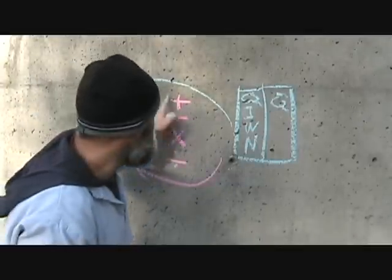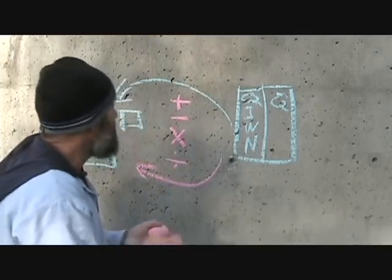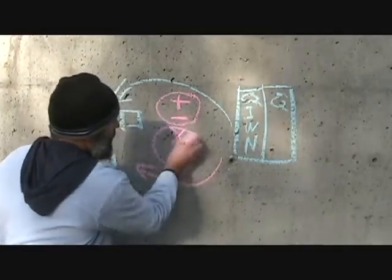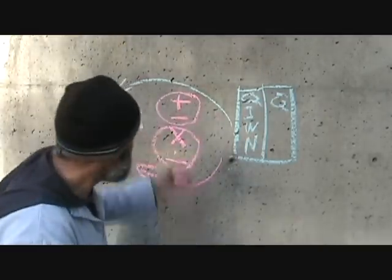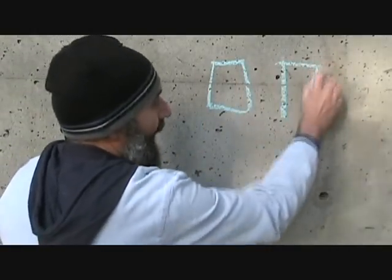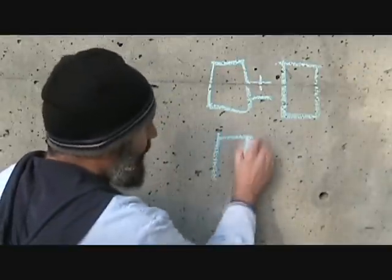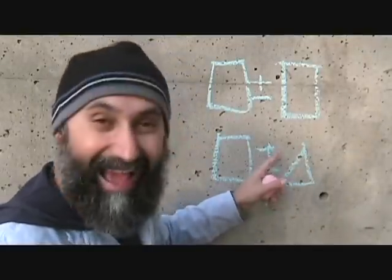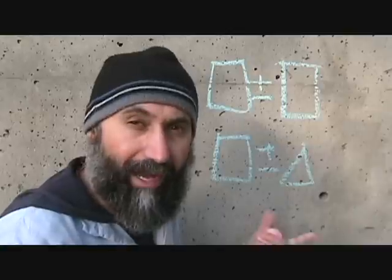Sometimes it's easier to do multiplication and division, sometimes subtraction and addition. We're going to group addition and subtraction together, and multiplication and division together. When adding things with exponents, there's basically a universal rule: you can only add and subtract like things. A box can only add or subtract from a box — a box plus a triangle just stays as a box plus a triangle. You can only add or subtract like terms.